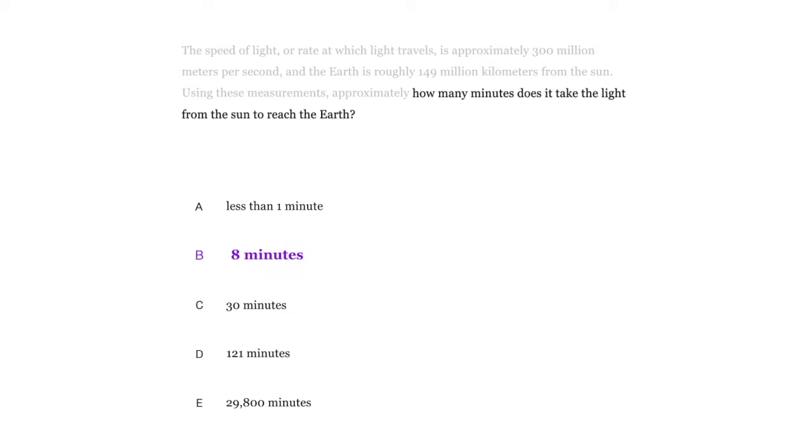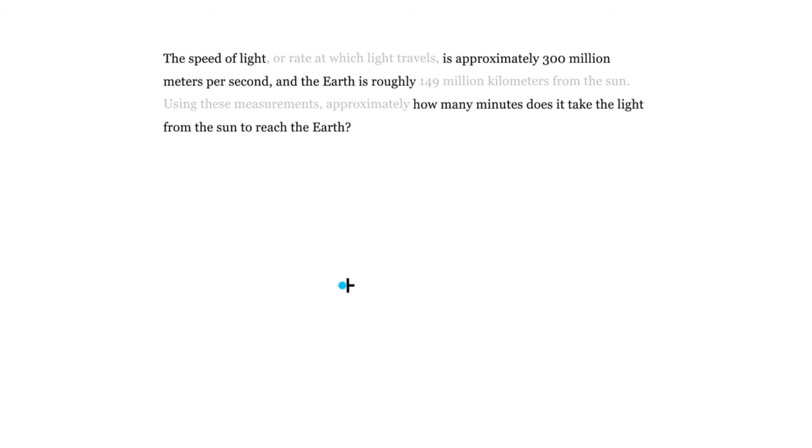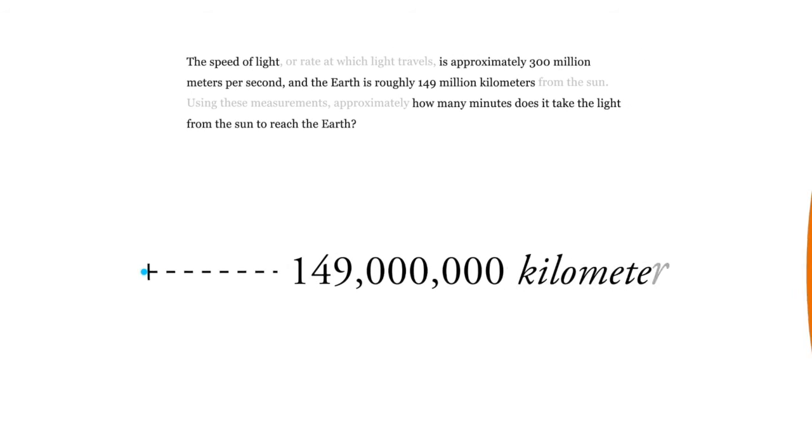So this is the correct answer, it's eight minutes. But let's figure out how we got there. So we're given two numbers. We're given that the speed of light is 300 million meters per second, that's its rate, and that the Earth is roughly 149 million kilometers from the sun.